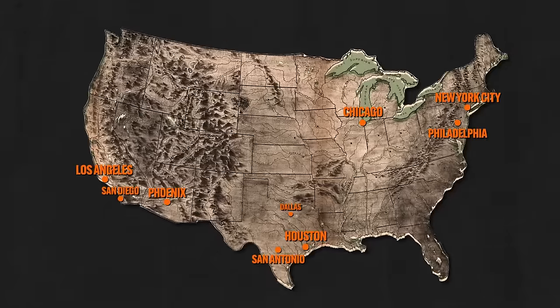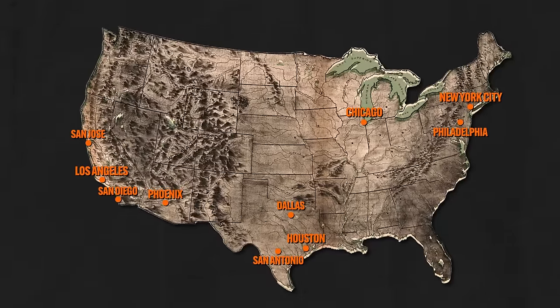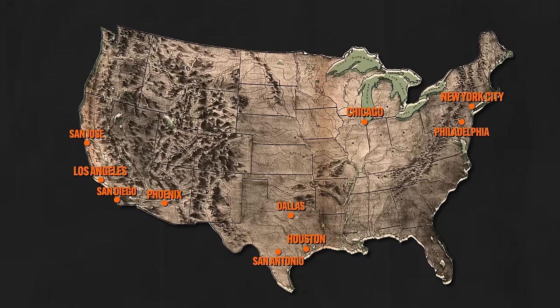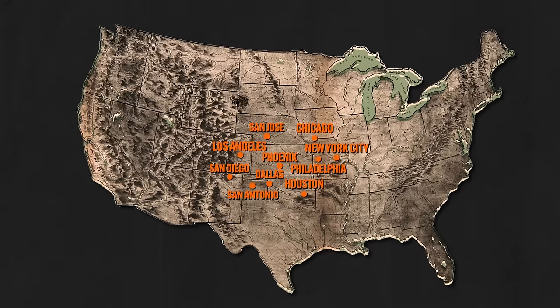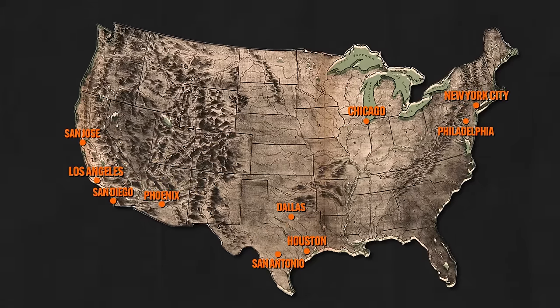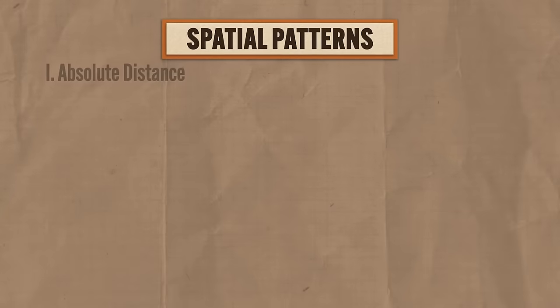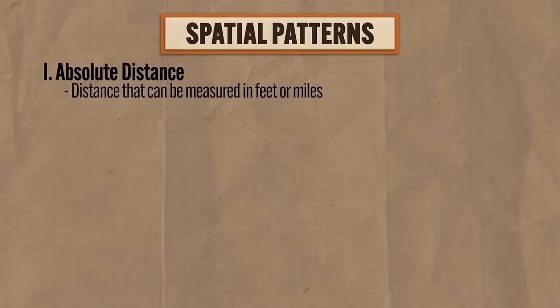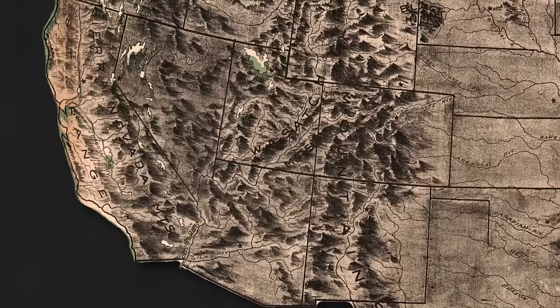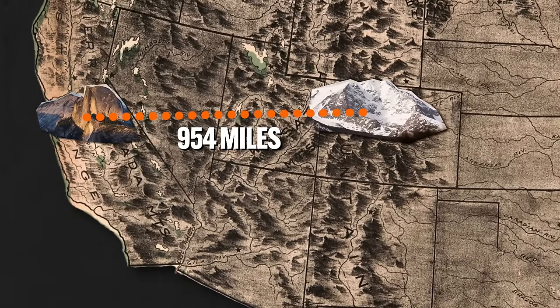For example, look at where the ten largest U.S. cities are located on this map. What a geographer gets positively giddy about is trying to figure out why these cities are spatially arranged like this and not like this. Now, there are four distinct kinds of spatial patterns you're going to see represented in maps. First is absolute distance, which is a distance that can be measured in feet or miles, or if you're nasty, kilometers. For example, the absolute distance between Yosemite National Park and Rocky Mountain National Park is 954 miles.